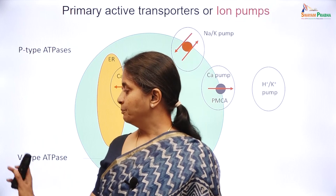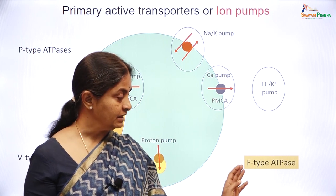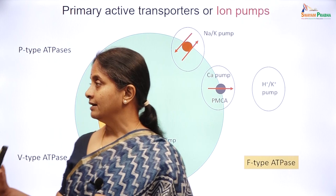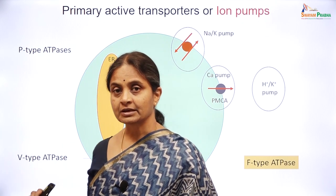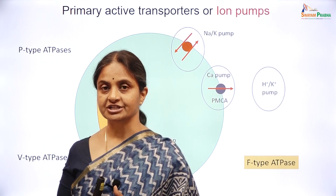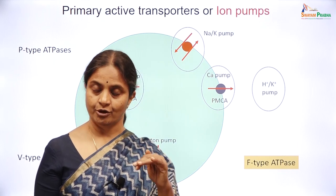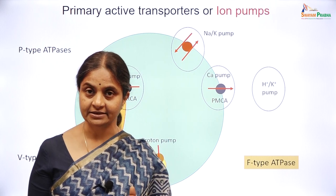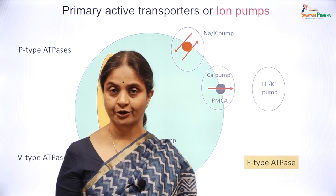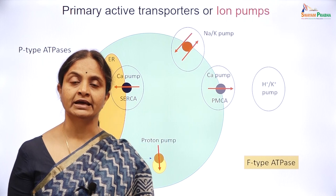Having seen the P and V-type ATPases, we will consider a special type of transporter: the F-type ATPase, also known as ATP synthase. While P and V-type ATPases use the energy liberated by cleaving ATP to move an ion against its concentration gradient, the F-type ATPase does the reverse — it allows protons to move along their concentration gradient and captures the energy released by this downhill movement to generate ATP. The F-type ATPase is therefore also called ATP synthase.